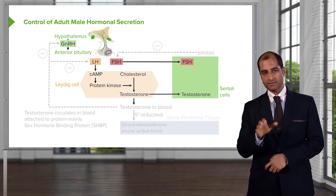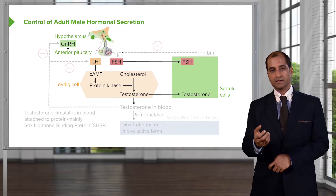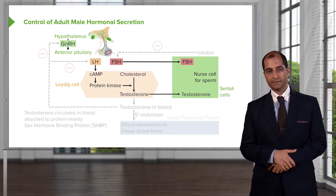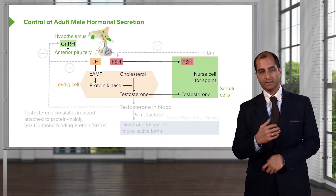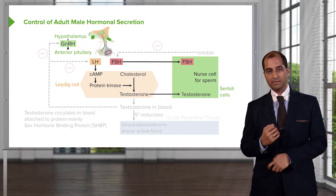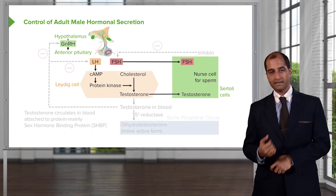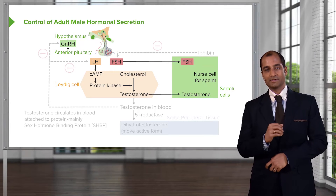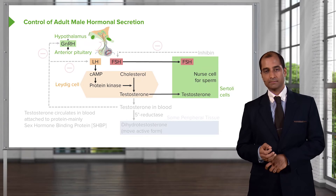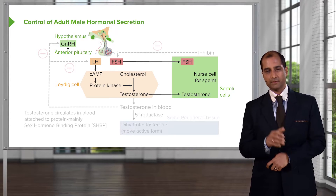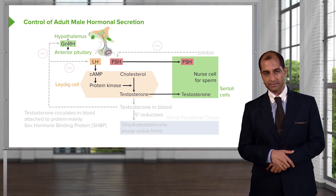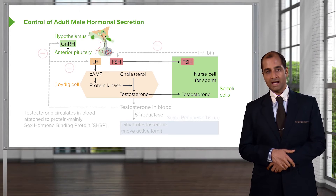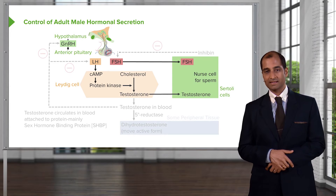When testosterone is produced, it goes into the Sertoli cell, which is the home of sperm development. Remember: Sertoli, spermatogenesis. Testosterone must be present in the Sertoli cell to properly influence spermatogenesis. At any point in time, if testosterone is not present in adequate amounts, the male is infertile — period. The sperm count could be normal, but you won't have proper spermatogenesis. It is that important.